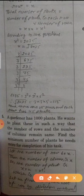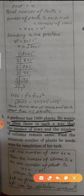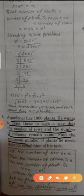Number 5. A gardener has 1000 plants. He wants to plant these in such a way that the number of rows and the number of columns remain same. Find the minimum number of plants he needs more for completion of his task.